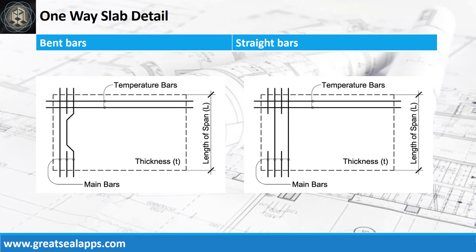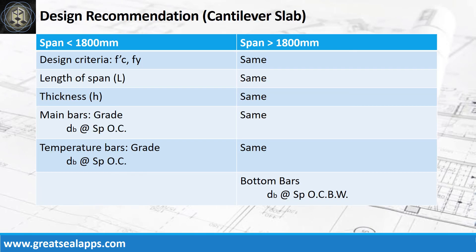One-way slab detail. Design recommendation format for cantilever slab as follows: design criteria includes length of span, thickness, main bars, temperature bars, and optional bottom bars.